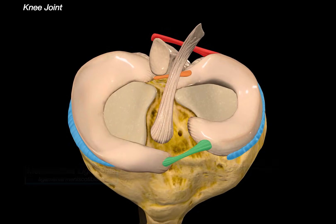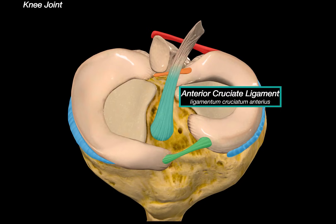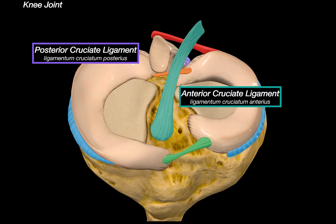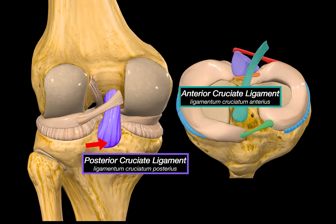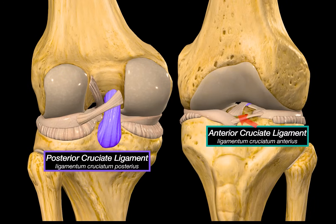In addition to those, there are two incredibly important ligaments that form an X shape inside the joint capsule — these are the cruciate ligaments. We have the anterior cruciate ligament, ACL, and the posterior cruciate ligament, PCL. The PCL originates from the posterior intercondylar area of the tibia and ascends anteriorly to attach to the medial femoral condyle — it prevents posterior displacement of the tibia. The ACL originates from the anterior intercondylar area of the tibia and runs posteriorly to attach to the lateral femoral condyle — it prevents anterior displacement of the tibia relative to the femur.